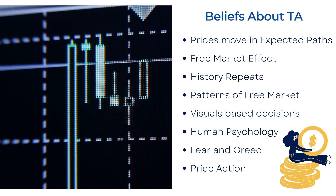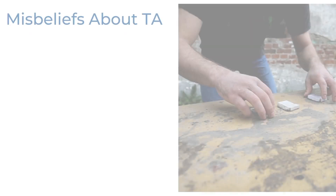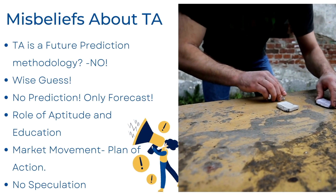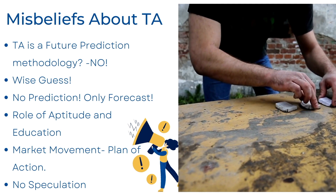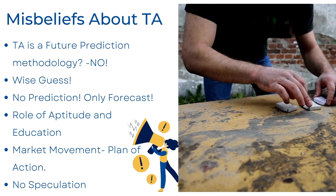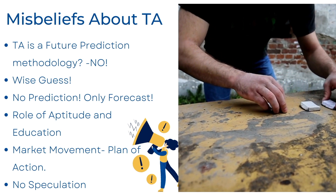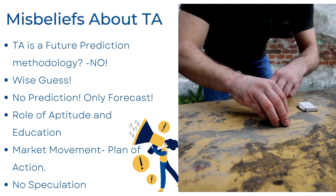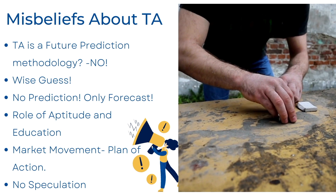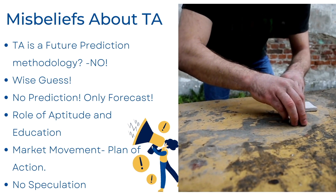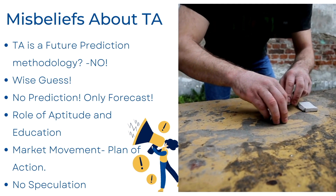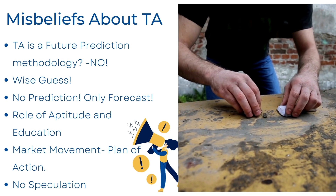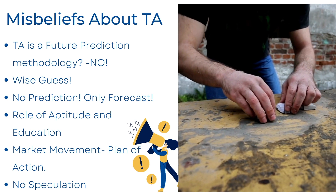Now let us see misbeliefs about technical analysis. Many people believe that technical analysis is a future prediction methodology, which is incorrect. Here we only observe past data — patterns, volume, and indicators — and use all this knowledge to make a wise guess of what is going to happen. So there is no prediction; we only make a calculated guess of the most likely outcome of an activity or situation that existed in the past.